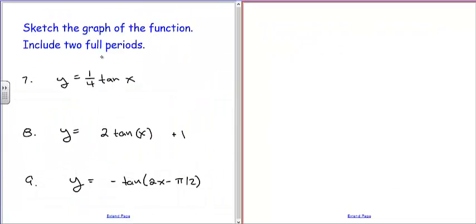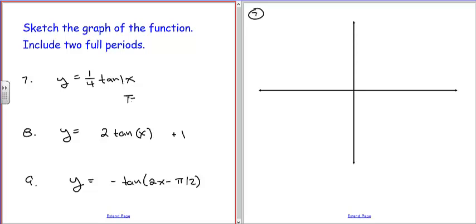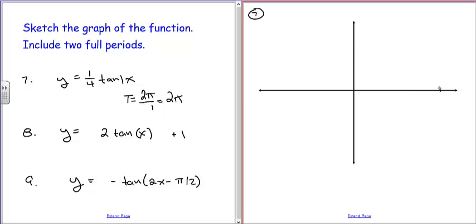Now we're going to move to plotting these. If you've watched the video on the examples, you'll see they look similar. The first one, number 7, has an amplitude of one-fourth, so instead of a y-value of 1 at the period points, we'll have a magnitude of one-fourth. We're centering this around the origin. First, we use the period to define the x-axis: with coefficient 1 in front of x, the period is 2π over 1, or 2π.